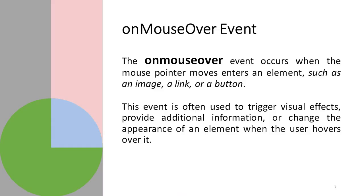Now we exemplify event handling with mouse over and mouse out events. The 'onmouseover' event occurs when the mouse pointer enters an element such as an image, link, button, or text. This event is often used to trigger visual effects, provide additional information, or change the appearance of an element when the user hovers over it.